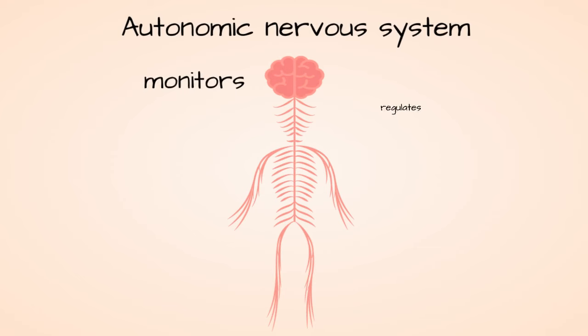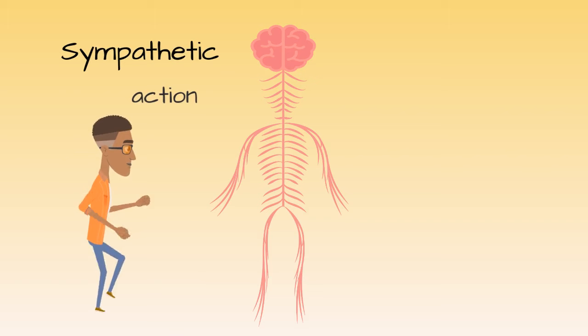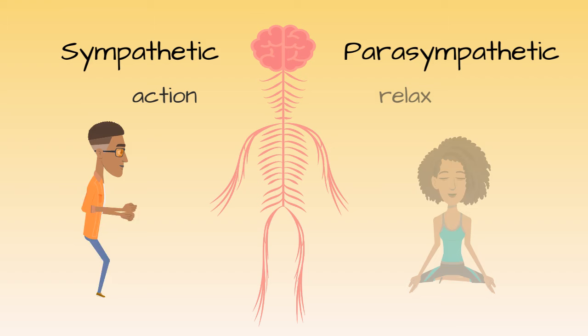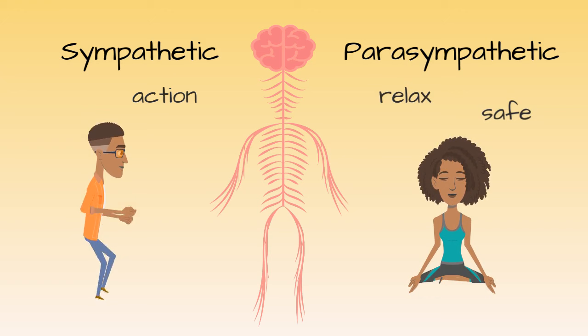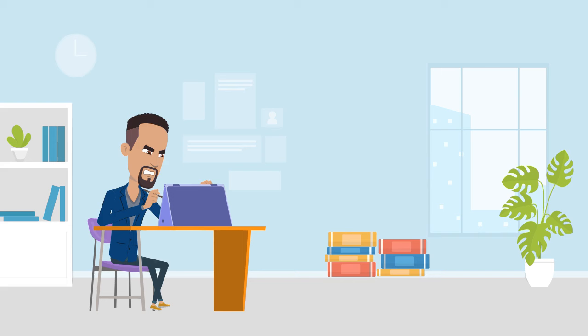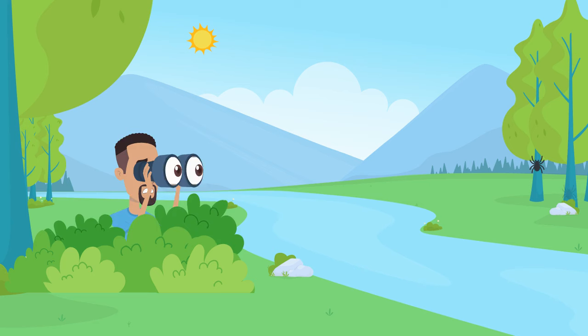The autonomic nervous system is part of our nervous system and it monitors and regulates the functioning of the visceral organs, including our heartbeat and our breath, and is a major contributing factor to our emotional state. It is formed by the sympathetic division, which mobilizes the body into action, and the parasympathetic division, which relaxes the body and calms it down when there is no danger and you are safe. Both divisions are involved in how we respond to stress and survival behaviors.